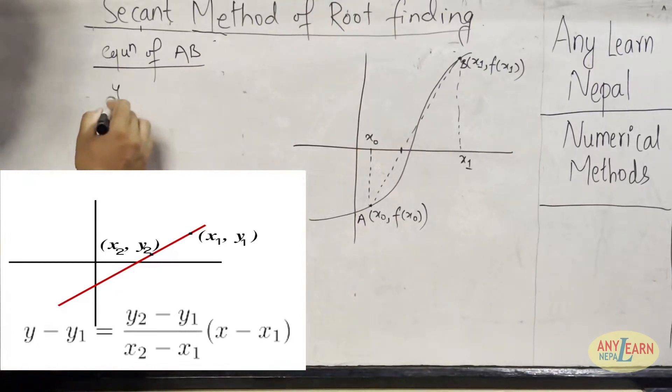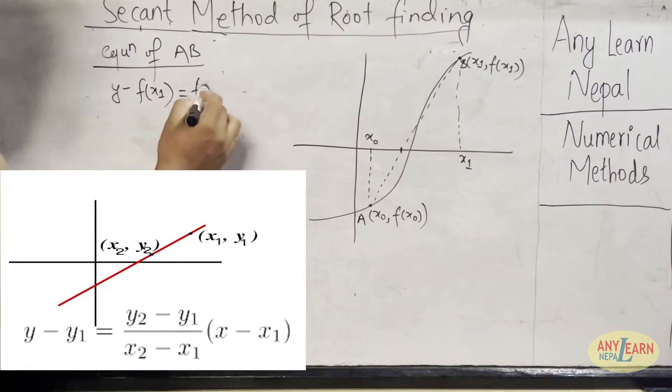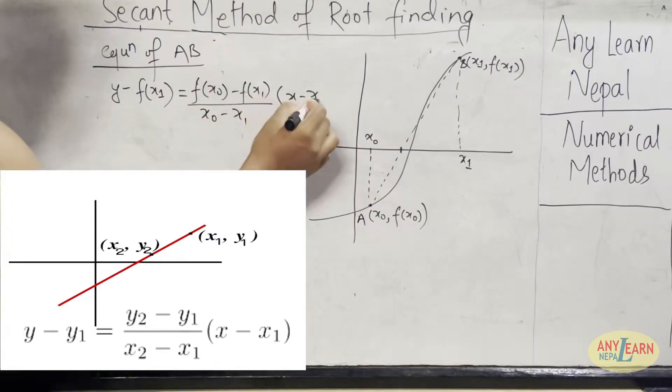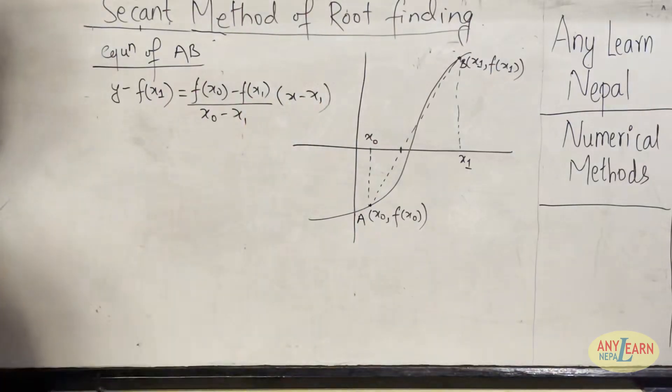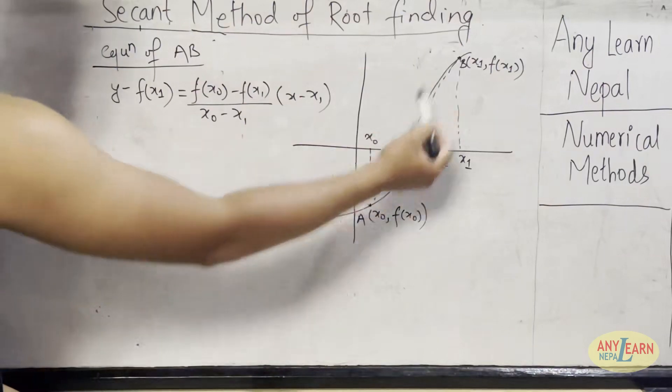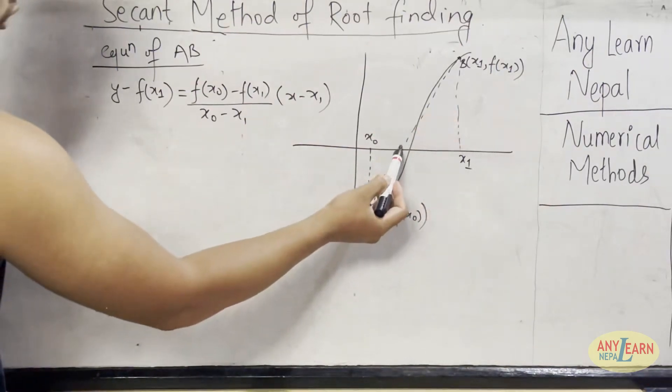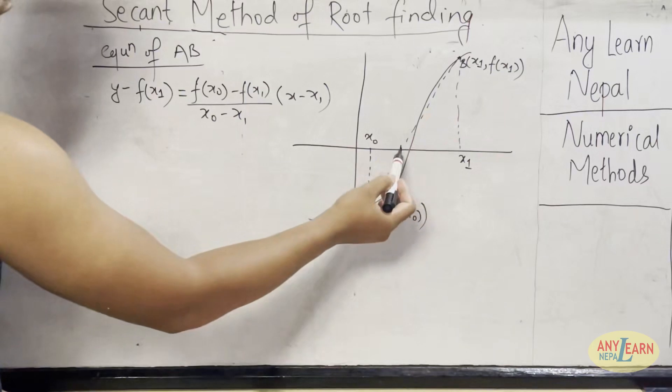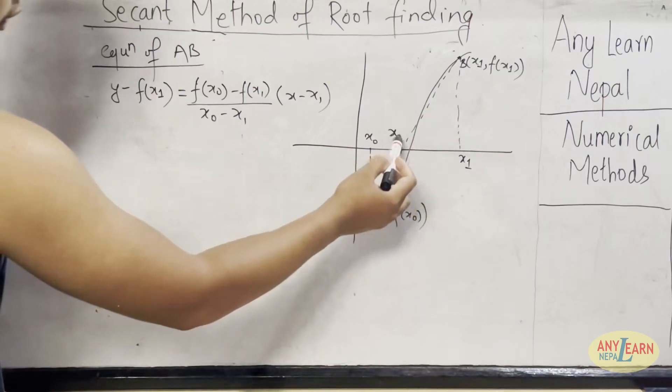For that, the equation becomes: y minus y1, that is y minus f(x1), equals (y2 minus y1), which is (f(x0) minus f(x1)) divided by (x2 minus x1), that is (x0 minus x1), times (x minus x1). So this is the formula to calculate the equation of line AB. So we got the equation of AB.